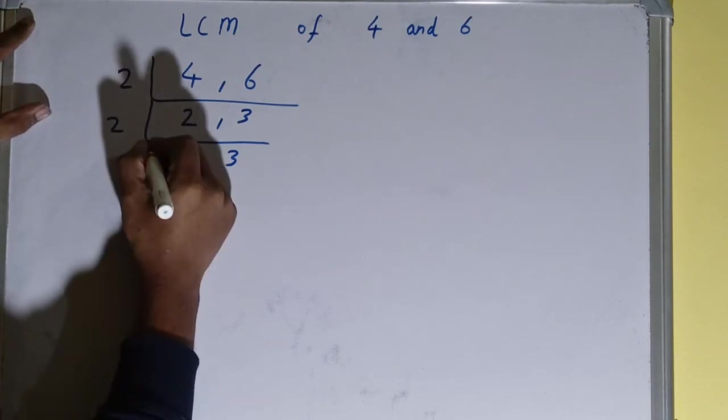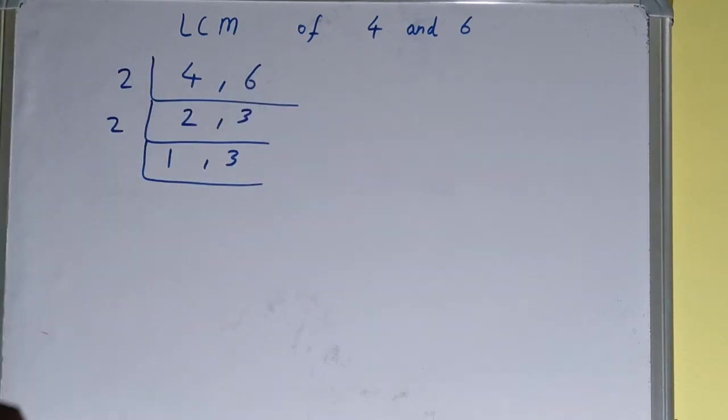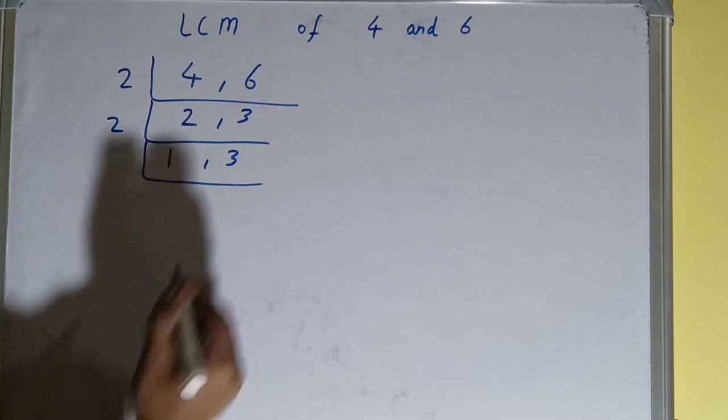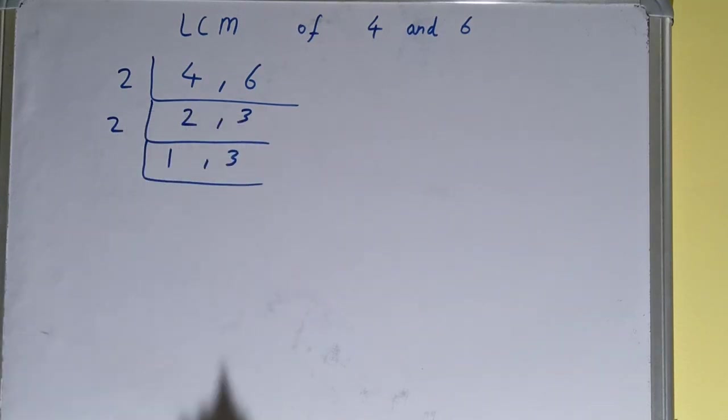Alright, again check: is any of the number divisible by 2? None of the numbers is divisible. So what we'll do? We'll go to the next lowest prime number, that is 3. Is any of the number divisible by 3?